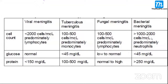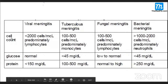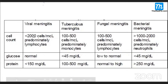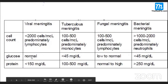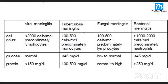This is the same CSF comparison table from last class. Cell count: in viral it is increased but less than 2000; in bacteria it is more; in tuberculosis it is increased but less; in fungal it is less. Glucose: normal in viral, decreased in tuberculosis (not as much), lowest in fungal; bacteria also decreased but less than fungal. Protein: increased in all — highest in tubercular.